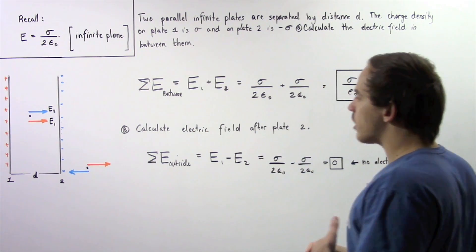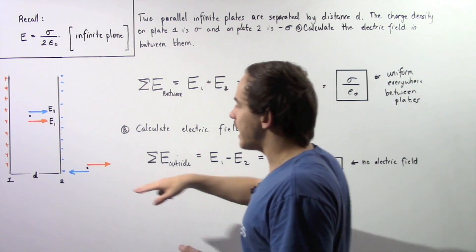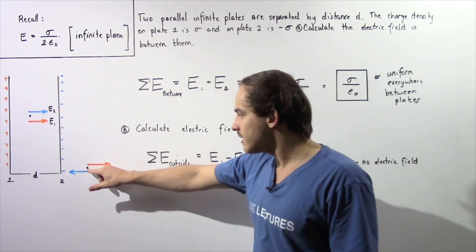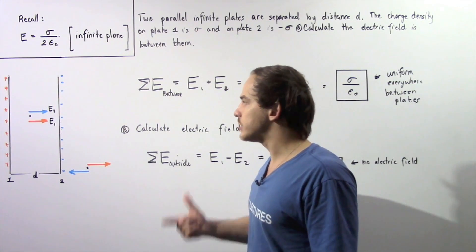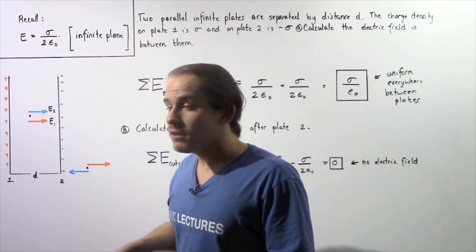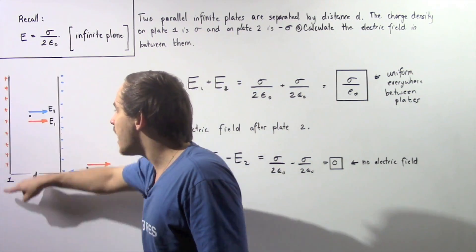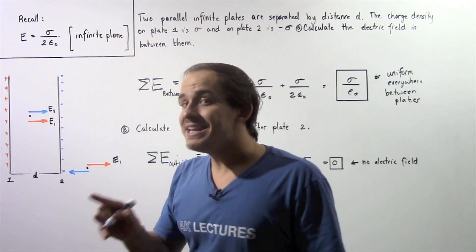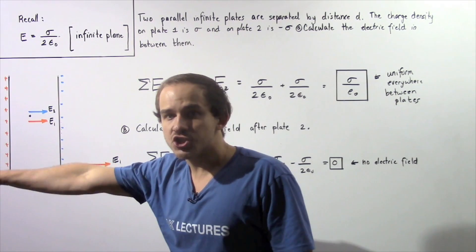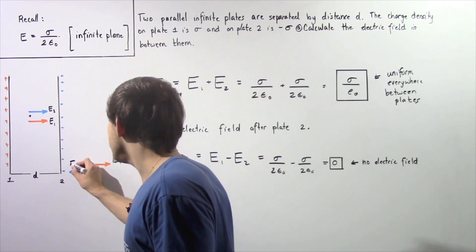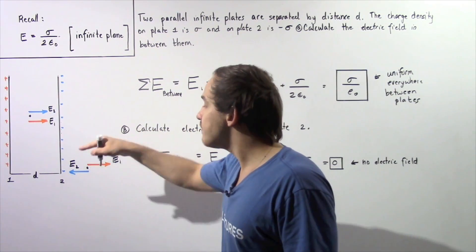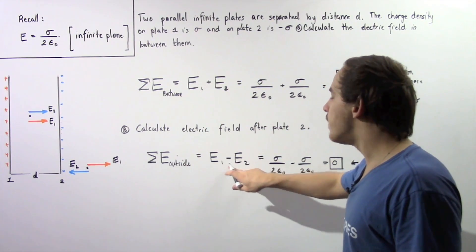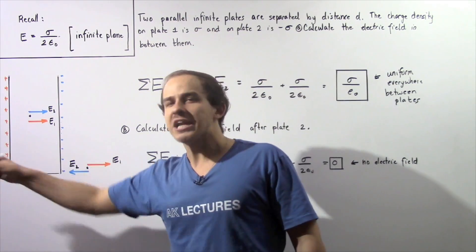Now let's move on to part B: calculate the electric field outside of plate number 2, in any region found beyond that plate. Let's choose a point out there. We again determine two electric fields. E1, the result of the positive plate, points away from it. E2, from the negative plate, pulls the field toward that charge. They have the same magnitude but are opposite in sign, so we have E1 minus E2, choosing one direction as positive and the other as negative.